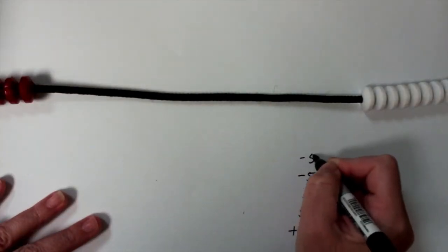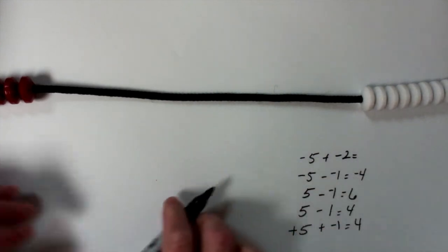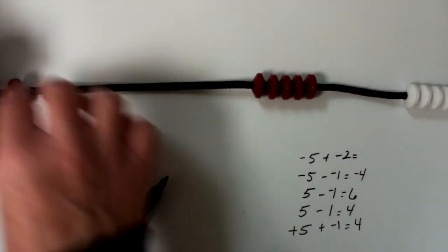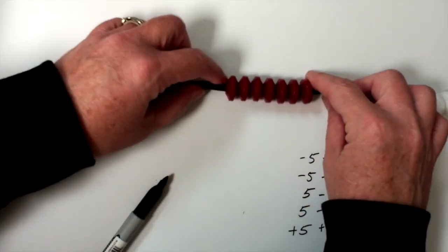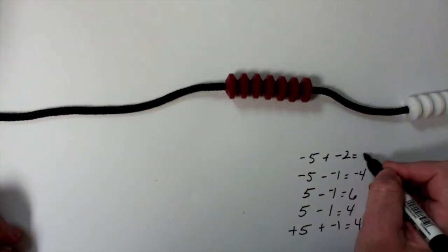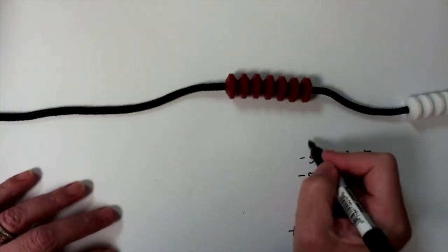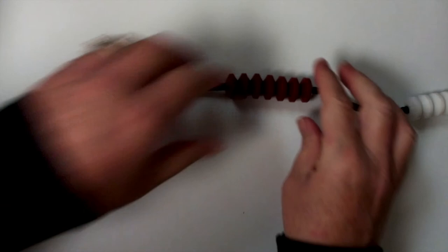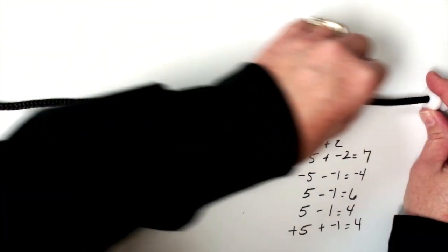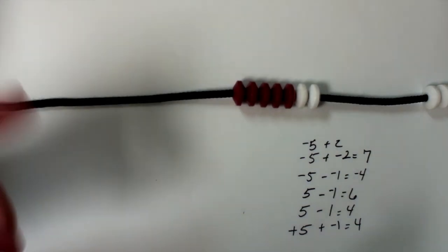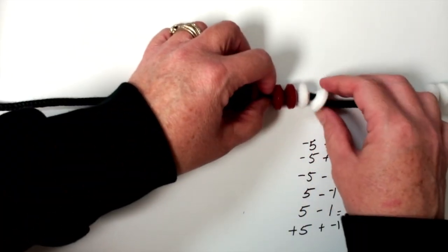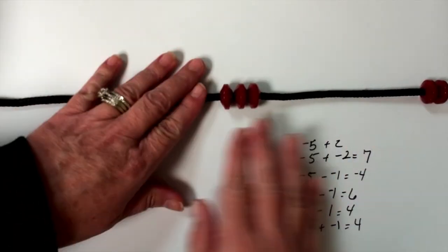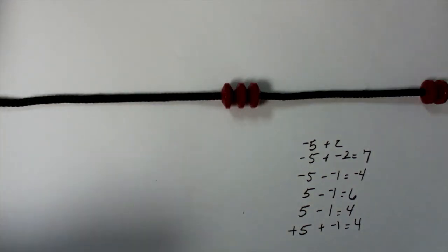Let's do negative five plus negative two. If I've got negative five, I'm going to pull over negative five, and I'm going to add negative two. This becomes seven — so negative seven. But what happens when it's negative five plus positive two? Well, bring over my negative five, I bring over my positive two. Do I have zero pairs? I do — two and two. Move them away because we're moving them off. What am I left with? Negative three.